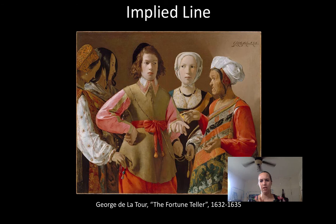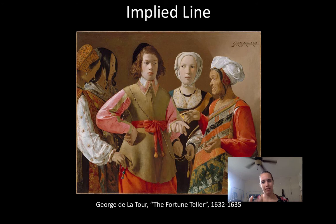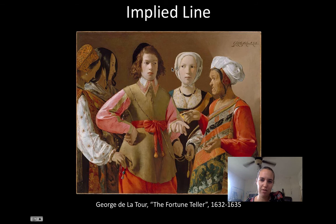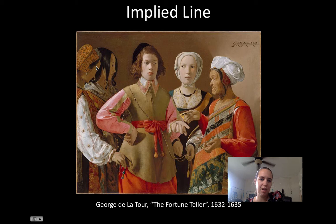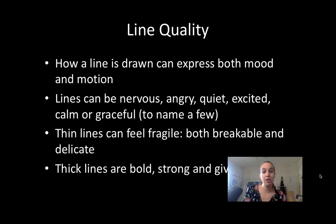Applied line — or implied line — is not an actual drawn line. It's a line created by our eye. For example, if a figure's eyes are looking in a direction, we follow that gaze, creating an implied line. In this image, her eyes look one way, his eyes look another way, and the hands point downward — everywhere there are eyes looking or hands pointing, that creates an implied line that moves us across the page.